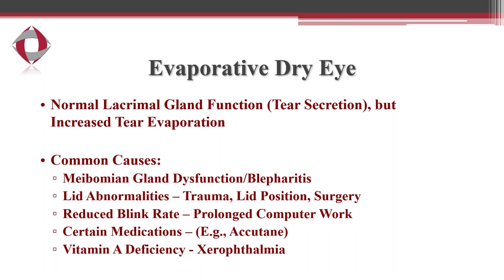Evaporative dry eye is basically where you have normal lacrimal gland function and normal tear secretion, but increased tear evaporation. You're secreting a sufficient amount of tears and have a sufficient tear film, but your tear film is evaporating too quickly. Common causes include meibomian gland dysfunction, lid abnormalities, reduced blink rate — which is very common with prolonged computer work — certain medications such as Accutane, and vitamin A deficiency.